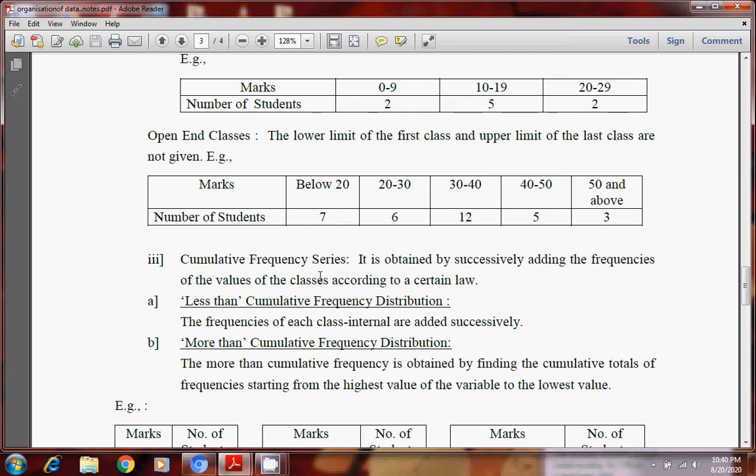Now cumulative frequency series. Cumulative frequency when we are adding up the frequencies. That is called cumulative frequency. It is obtained by successively adding the frequencies of the values of the classes according to a certain law. The next is less than cumulative frequency. The frequency of each class interval are added successively. More than cumulative frequency is obtained by finding the cumulative total of frequencies starting from the highest value of the variable to the lowest.